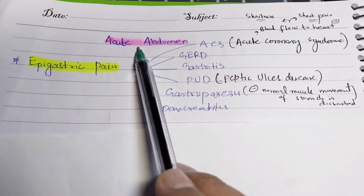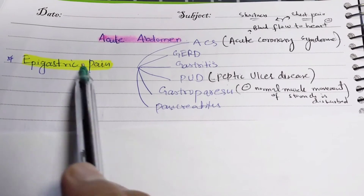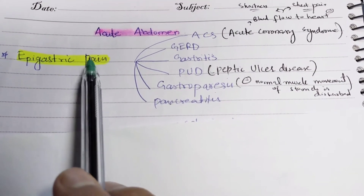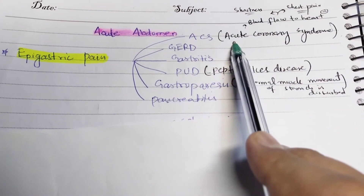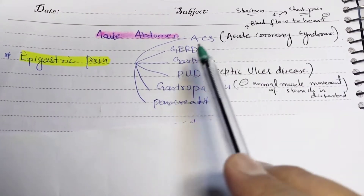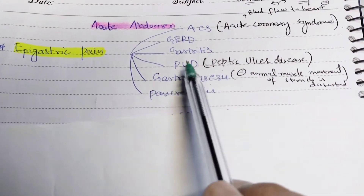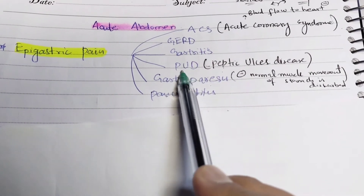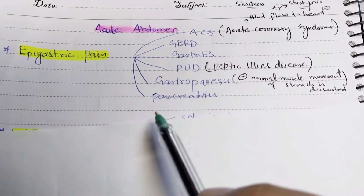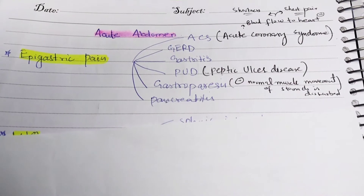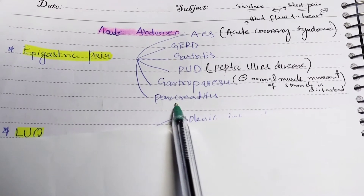In acute abdomen, we will talk about differential diagnoses according to the location of pain. If a person has epigastric pain, our differentials can be acute coronary syndrome — where blood flow to the heart is limited — gastroesophageal reflux disease, gastritis, and peptic ulcer disease.